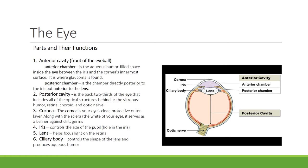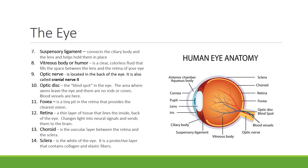The ciliary body controls the shape of the lens and produces aqueous humor. Look at the diagram on the right and make sure that you can locate all of these structures. Follow along the diagram as I describe the parts of the eye.